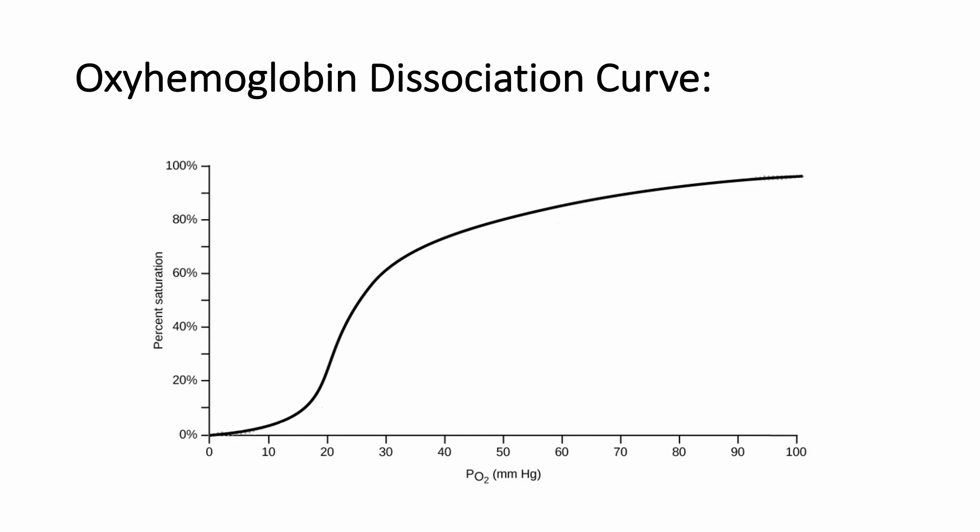In reality, unique properties of hemoglobin, as well as several other external factors, in addition to PaO2, affect binding of oxygen to hemoglobin molecules. Together, these many factors explain the S-shape of the classic oxyhemoglobin dissociation curve seen here, which we will discuss more in detail.